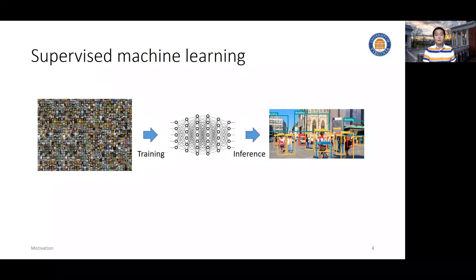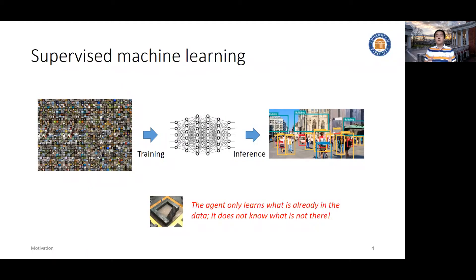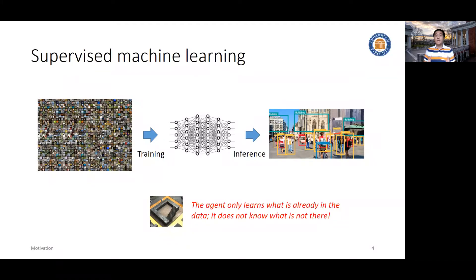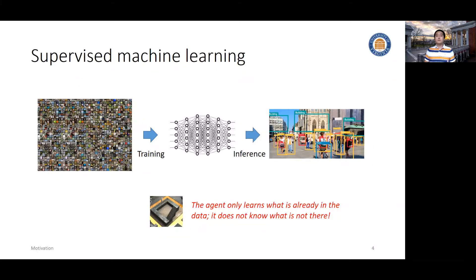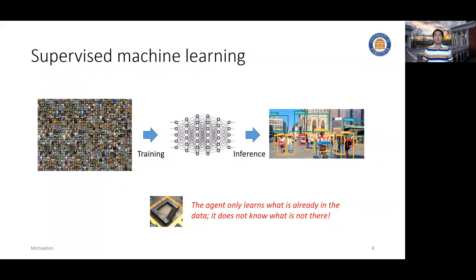Clearly we know the drawback or limitation of the system is as obvious as the success of it. That is, the system only learns from what we provide. The learned system only knows what is already in the data — it still doesn't know what is not there. If you never provide any training data about cats, we cannot expect this algorithm to automatically figure out that concept and make predictions. System failure often leads to catastrophic consequences, which we cannot afford.